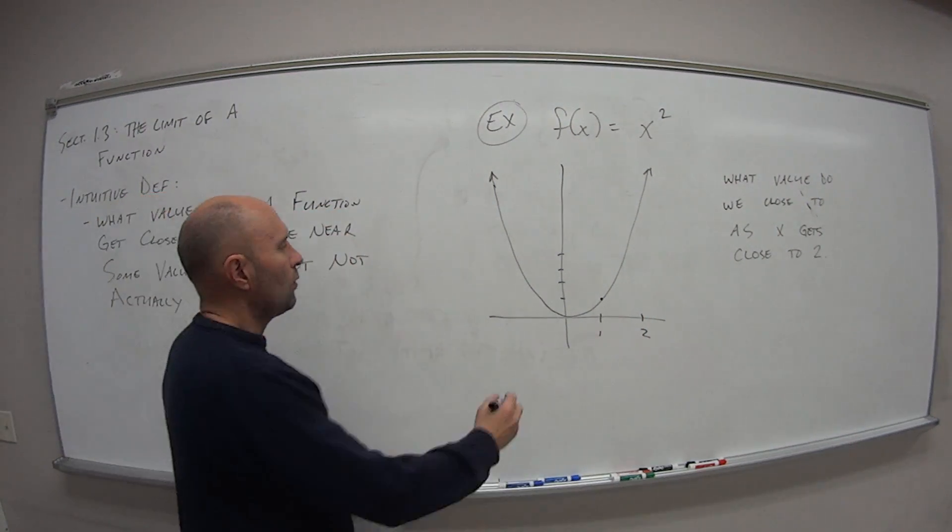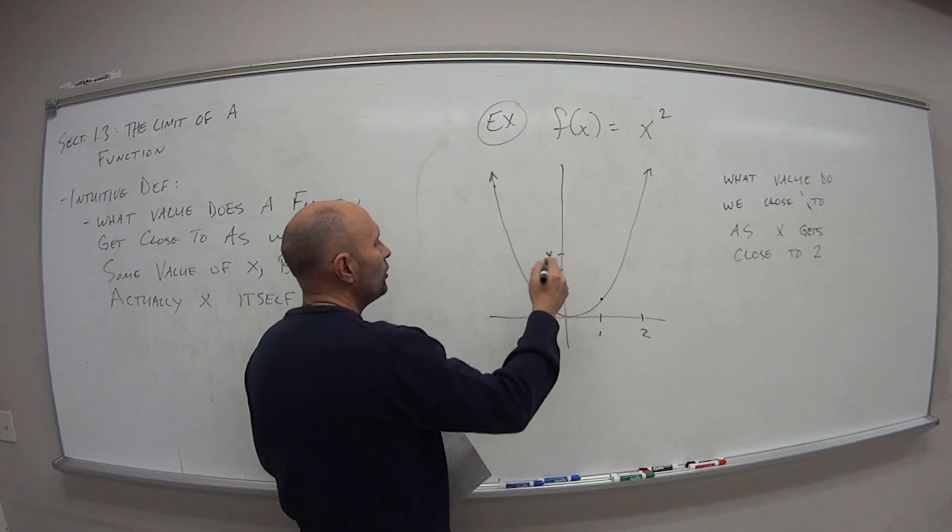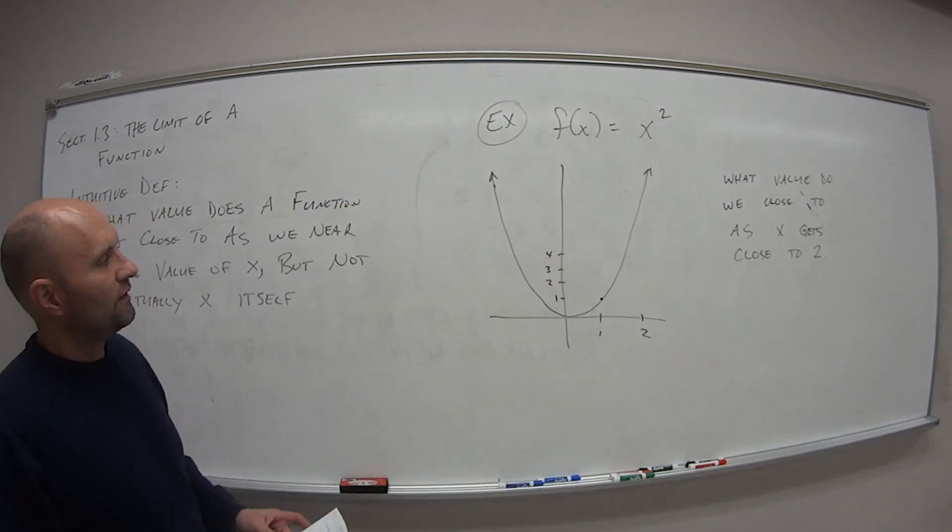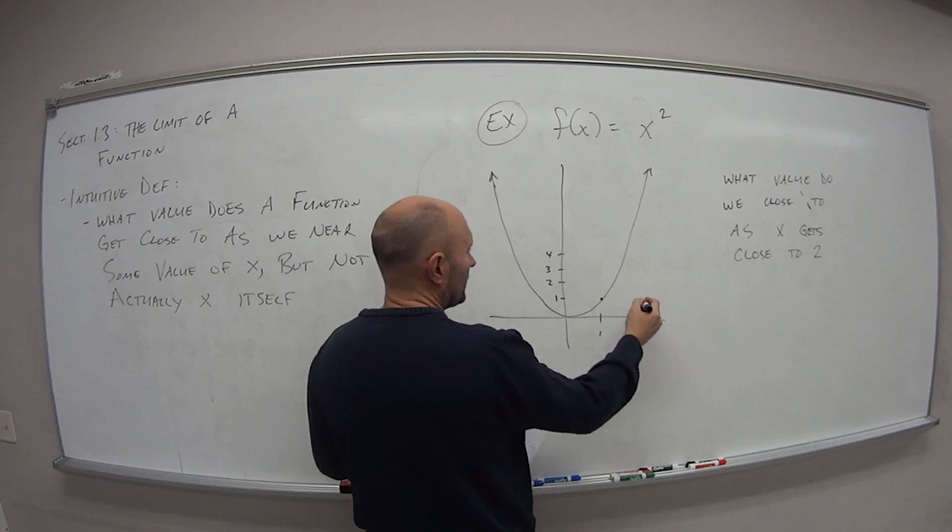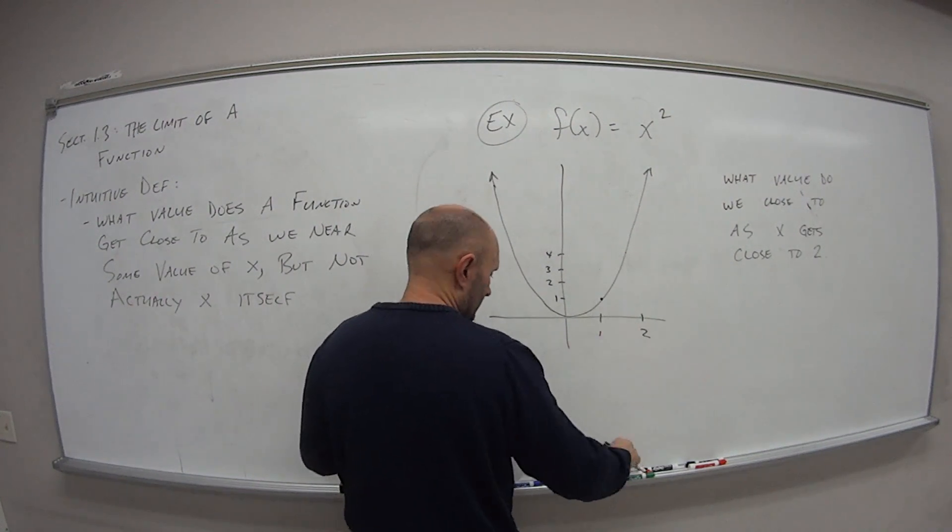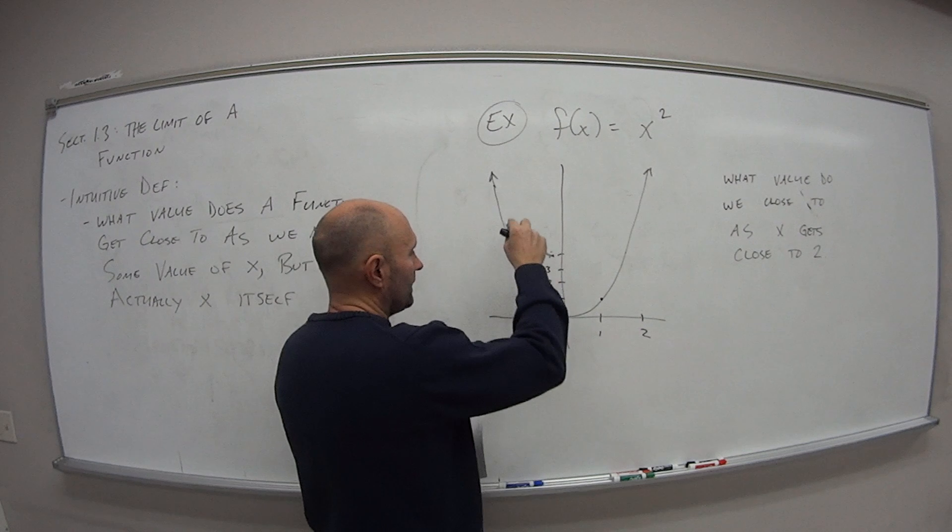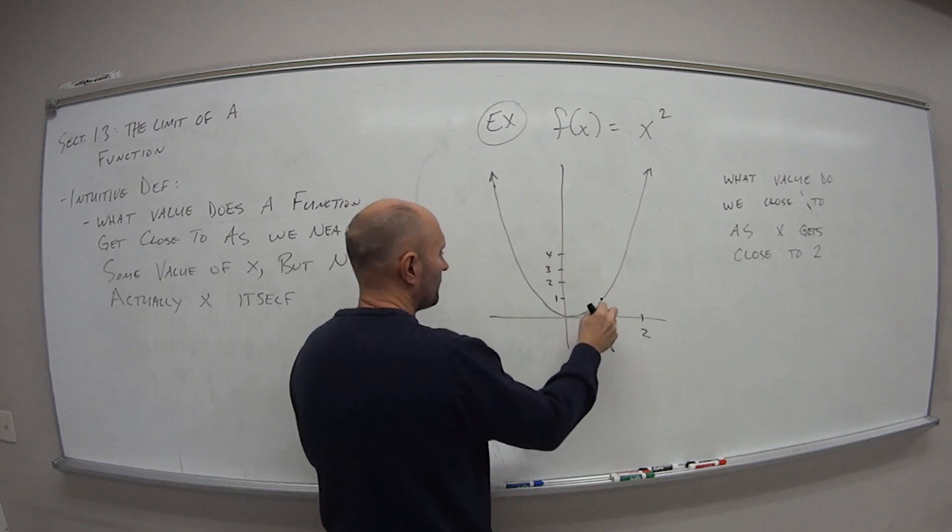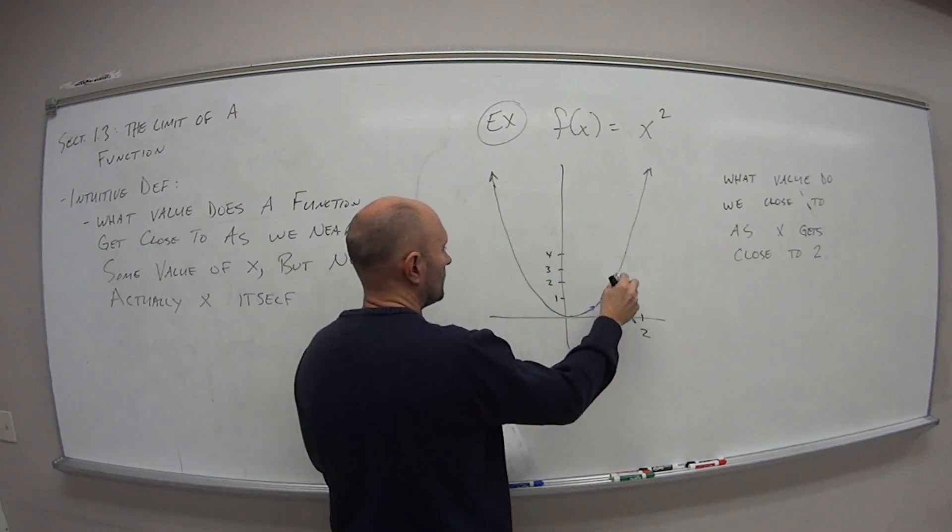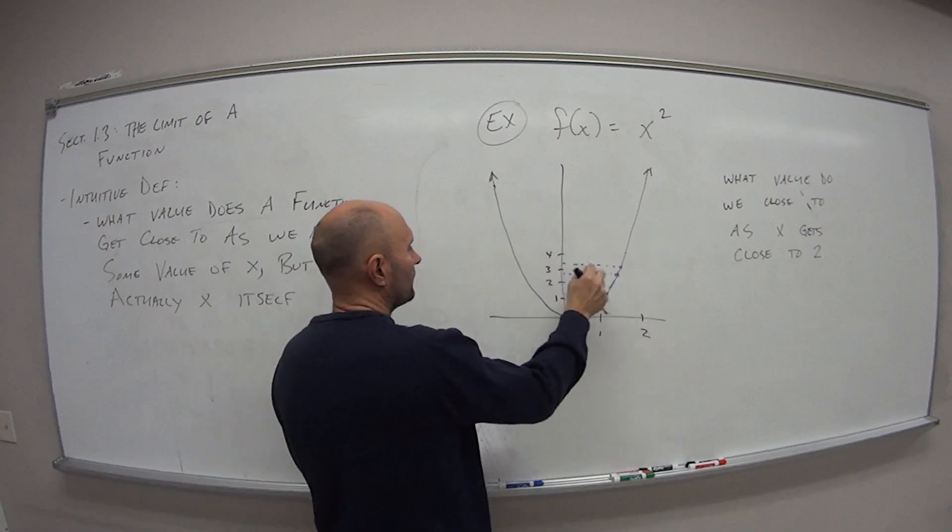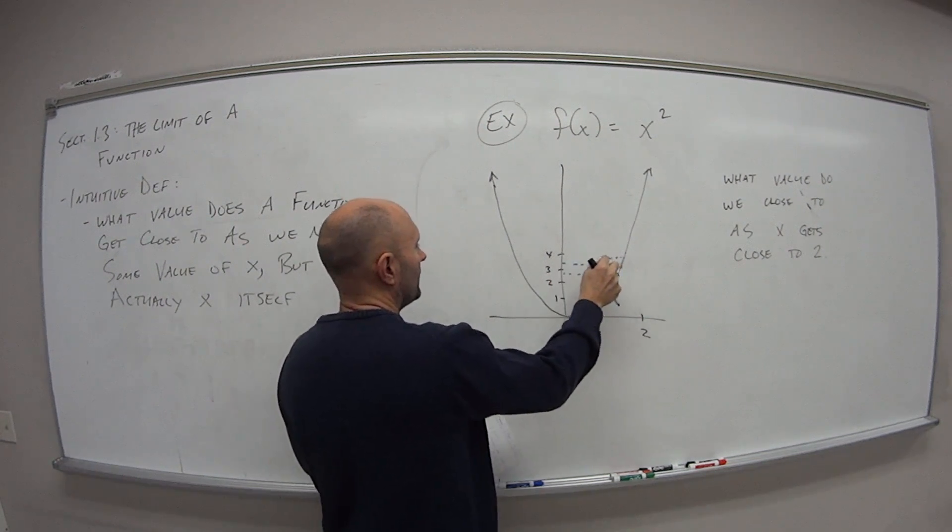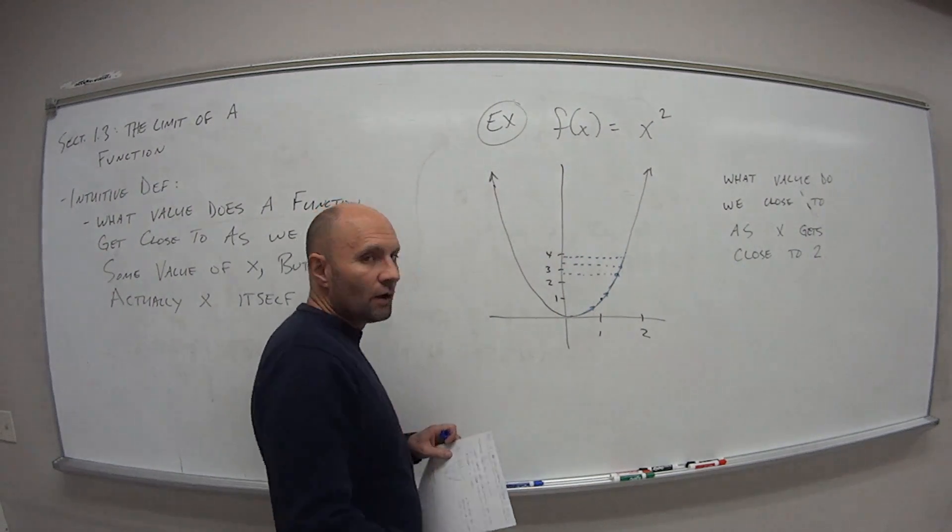So what we're wondering here, what the intuitive definition says in terms of a limit, is when x, as we get closer to 2, as I come from the left side, if I keep coming back to the y-axis, what value am I getting closer and closer to?